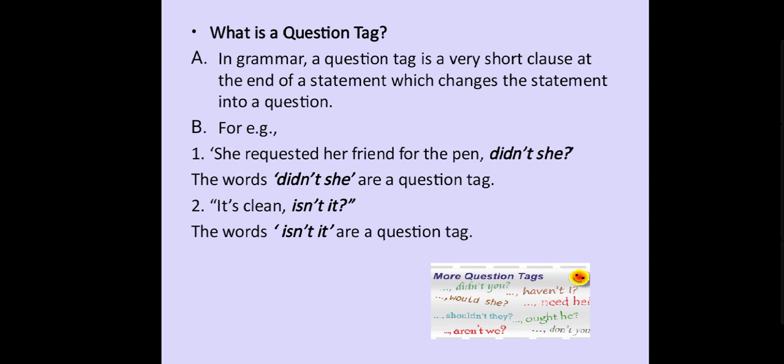For example, she requested her friend for the pen. Didn't she? The words 'didn't she' are a question tag. Second, it's clean, isn't it? The words 'isn't it' are a question tag.